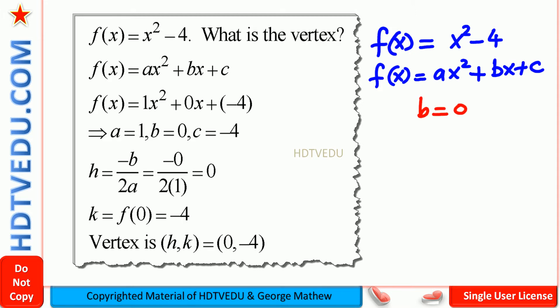When nothing is written next to x to the power of 2, we have a is equal to 1. So a equals 1, a is not equal to 0, b equals 0. And what about c? c equals negative 4.